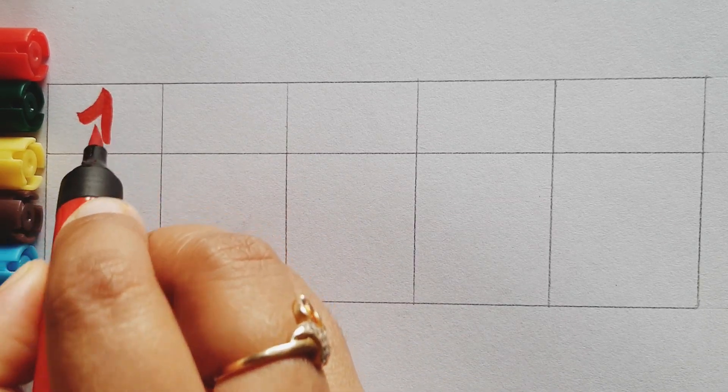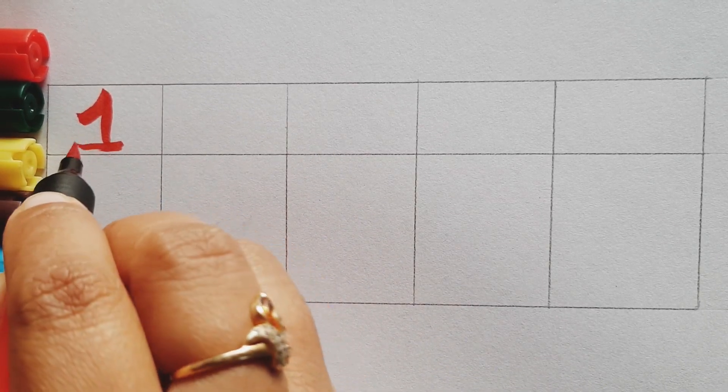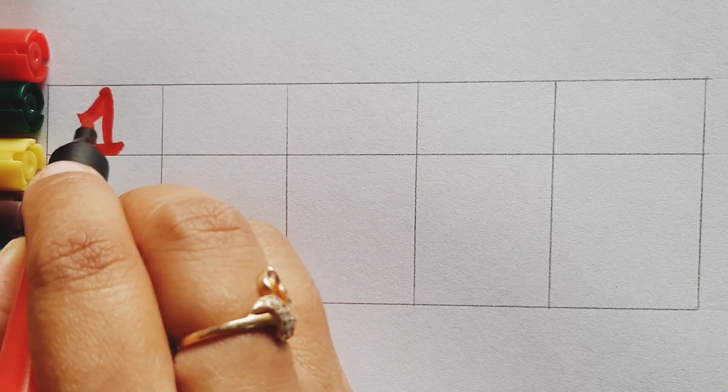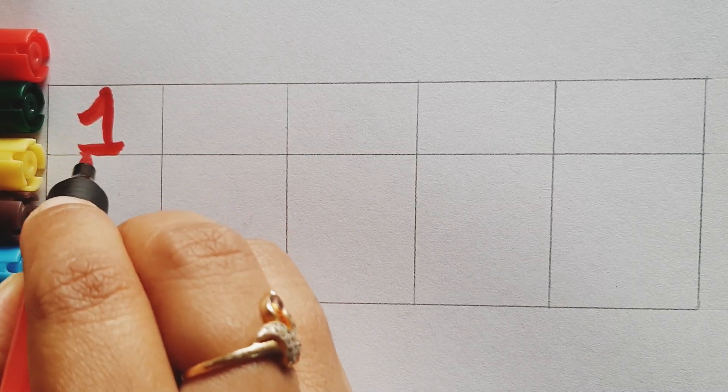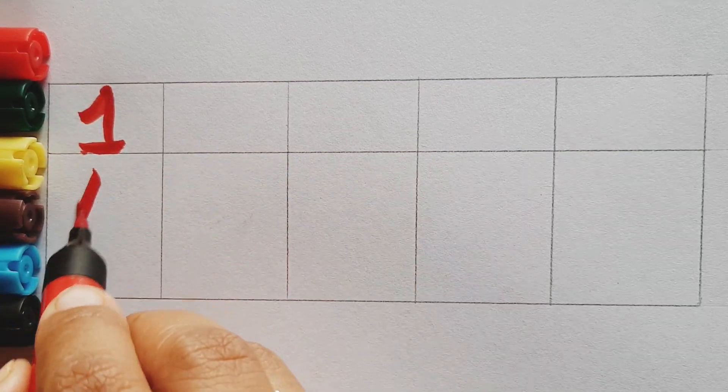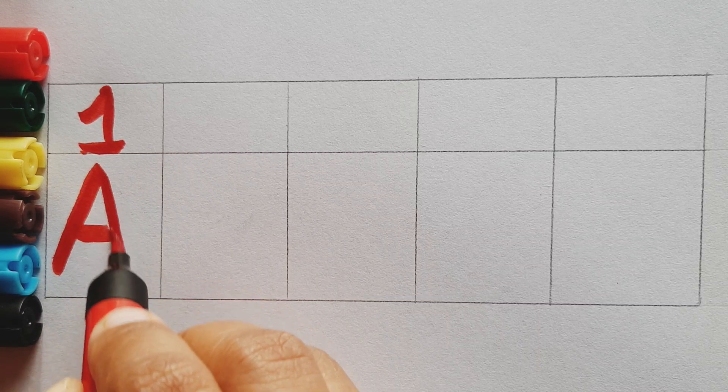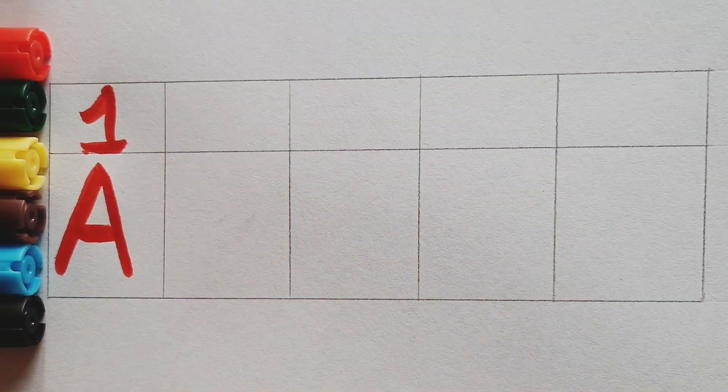Number one, red color. Number one - Hindi mein isse kehte hain ek. Capital A, A for apple. Apple means seb. Capital letter A.